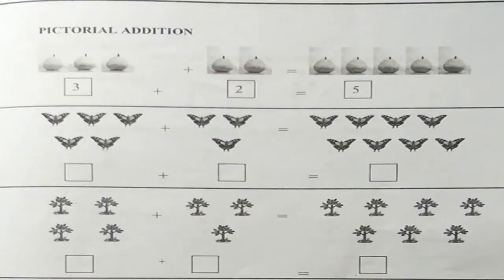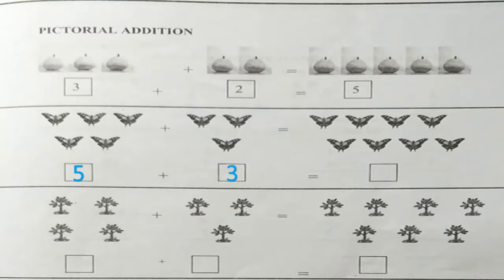Children, turn to page number forty-five in Bal Ganit. Write today's date. Here we see few pictures and we have to find out the total number of objects in each picture. The first one is done. For the second one, how many butterflies can you see? There are five. Five plus — how many butterflies do we see next? Three. Let's add five plus three. There are eight butterflies.